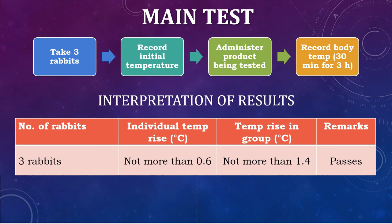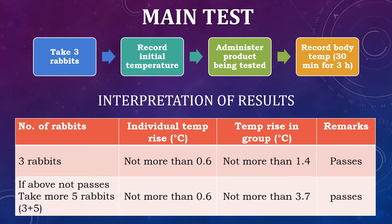If the individual temperature rise is greater than 0.6 degree centigrade and the sum of the three rabbits' body temperature rises is greater than 1.4 degree centigrade, then take an additional five rabbits and perform the same procedure. Now with the original three plus the additional five, there are 8 rabbits total. For these 8 rabbits, if the individual rise is not more than 0.6 degree centigrade, or their sum of temperature differences is not more than 3.7 degree centigrade, then it passes the test. If either the individual rise exceeds 0.6 degree centigrade or the group sum exceeds 3.7 degree centigrade, then we can say that pyrogen is present.